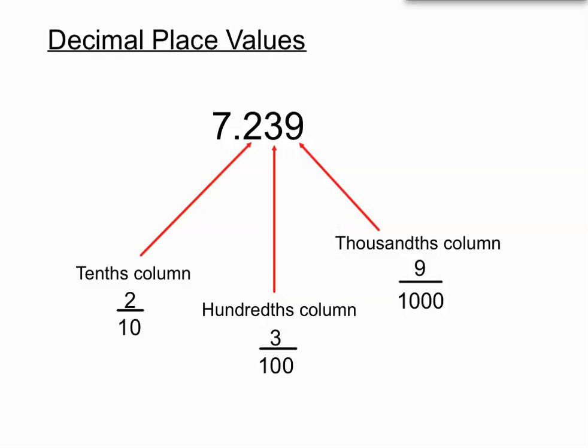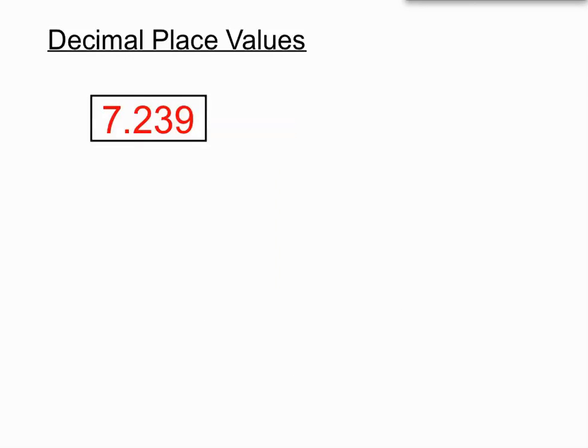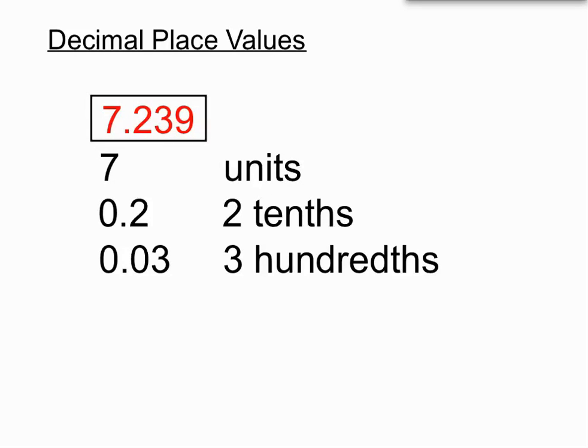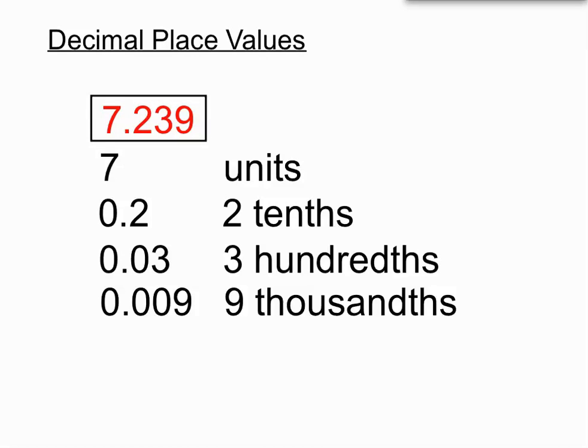So each of those digits have different place values depending on where they are in the decimal. We can think of that number 7.239 as being made up of 7 units at the front, then after the decimal point we have 2 tenths, 3 hundredths, 9 thousandths, and all of those values go together to make up the number 7.239. A decimal is made up of different parts depending on the place values and what numbers are in which columns.